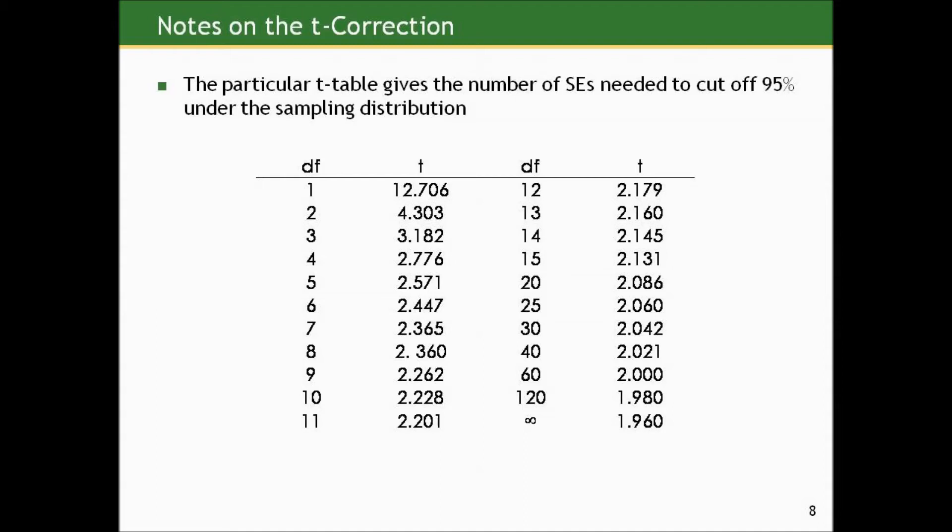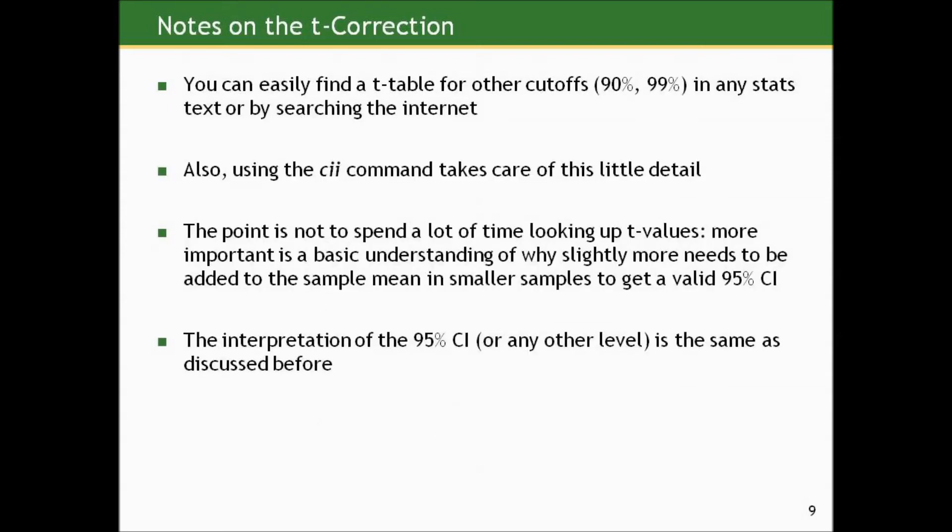Interestingly, if we only had two pieces of information in our sample — and hence one degree of freedom — we need to go out almost 13 standard errors in either direction to get 95% coverage. That reinforces the idea that a sample of two is probably too small to make any accurate statement about the population. But as our degrees of freedom increase, this quickly goes down and starts to level off at about two when we hit 60. You can easily find a T table for other cutoffs as well, in any stats text or by searching the internet.